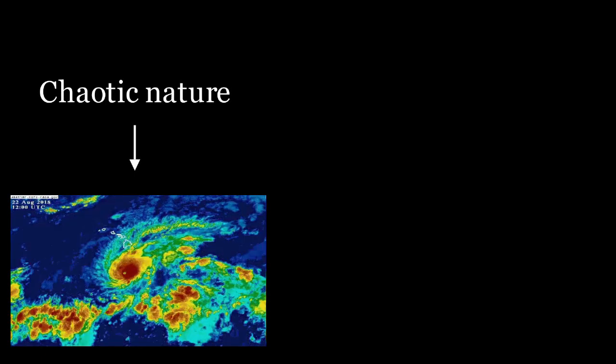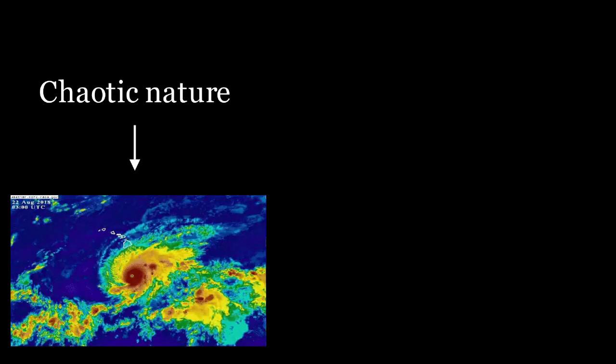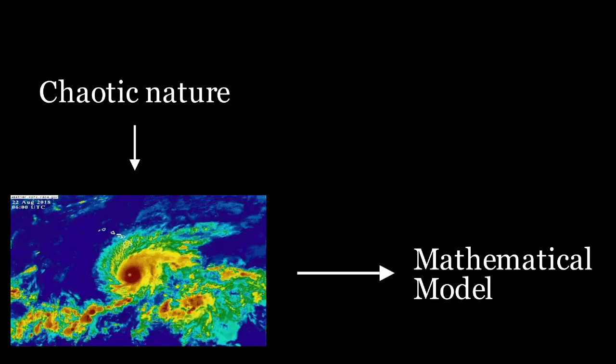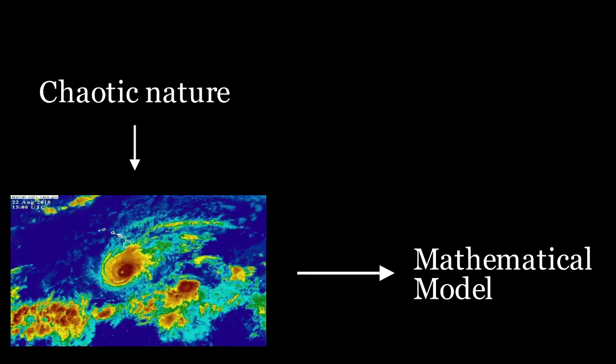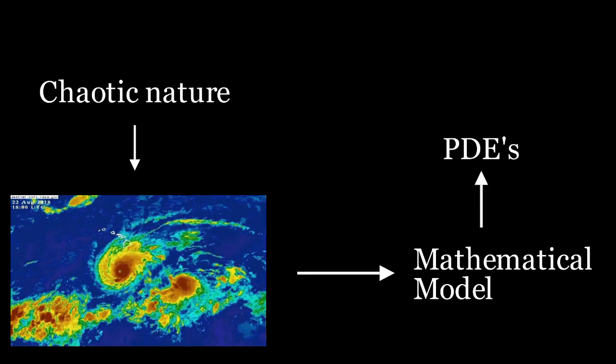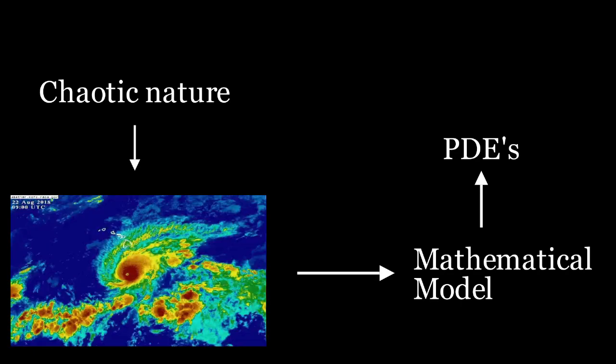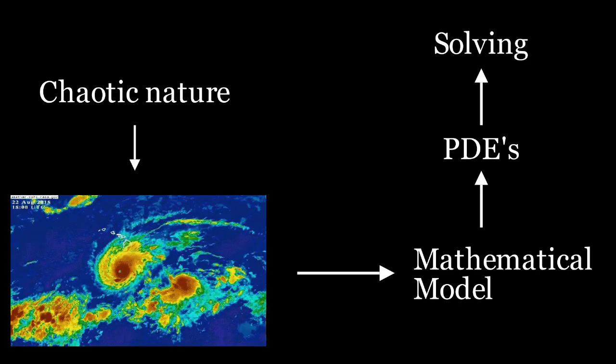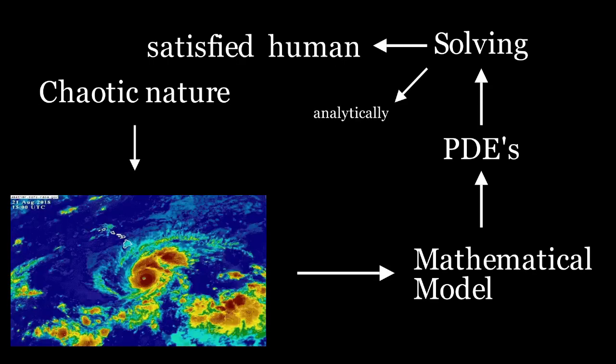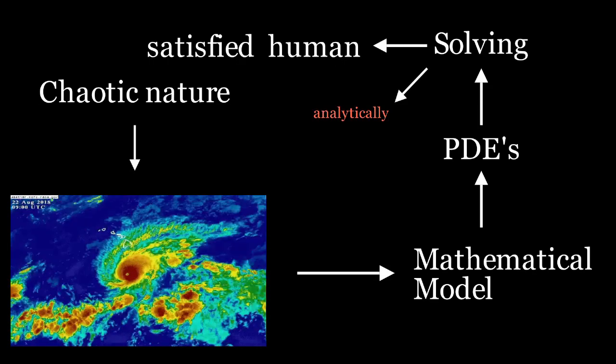Nature can be very complicated, but knowledge-seeking creatures you are. We always tried our best to model certain natural events with mathematical equations. These equations are often partial differential equations, and solving them helps us understand our world better. Doing it analytically is almost always very complicated, but luckily there is a way to do it numerically.